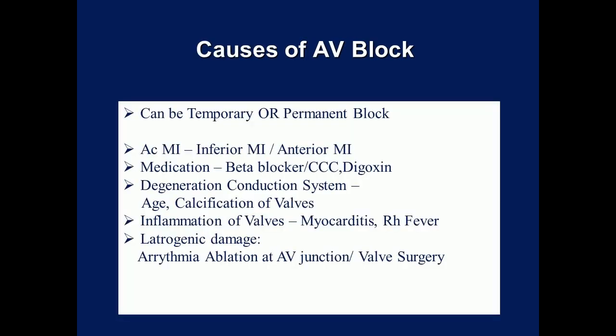Causes of Atrioventricular Block: Can be temporary or permanent block. Causes include acute MI — inferior MI and anterior MI. Medications such as beta blockers, calcium channel blockers, and digoxin. Degeneration of the conduction system due to age, calcification of valves, inflammation of valves, myocarditis, rheumatic fever. Iatrogenic damage from arrhythmia ablation at the atrioventricular junction and valve surgery.